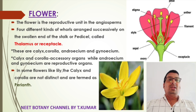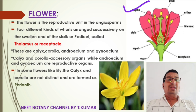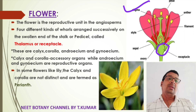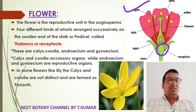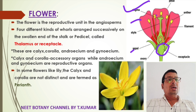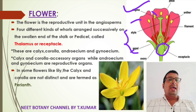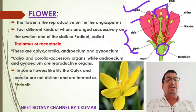The flower is the reproductive unit of the angiosperm. Four different kinds of whorls are arranged successively on the swollen end of the stalk or pedicel, called the thalamus or receptacle. The lateral appendages are calyx, corolla, androecium, and gynoecium. Calyx and corolla are accessory organs; androecium and gynoecium are reproductive organs.